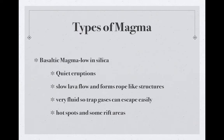Remember we talked before about three different types of igneous rock formed because of the type of magma — BAG: basaltic, andesitic, and granitic. Basaltic magma is low in silica, produces quiet eruptions, has a very slow lava flow that comes down like ropes thrown down the side of the mountain. They're very fluid, so trapped gases escape very easily and slowly — that's why they're quiet eruptions — and they're usually found at hot spots and some rift areas.